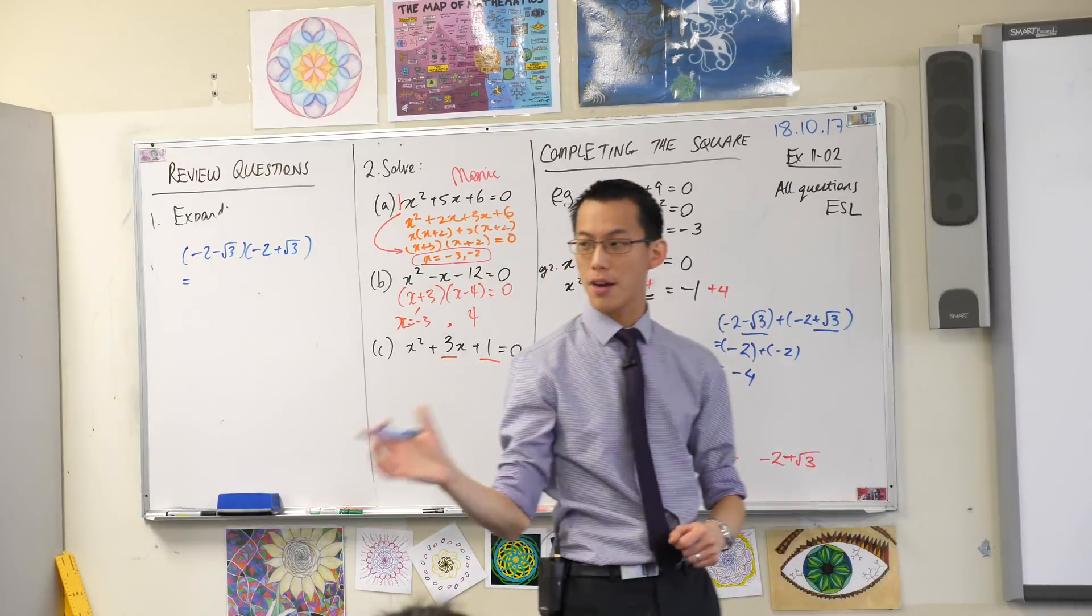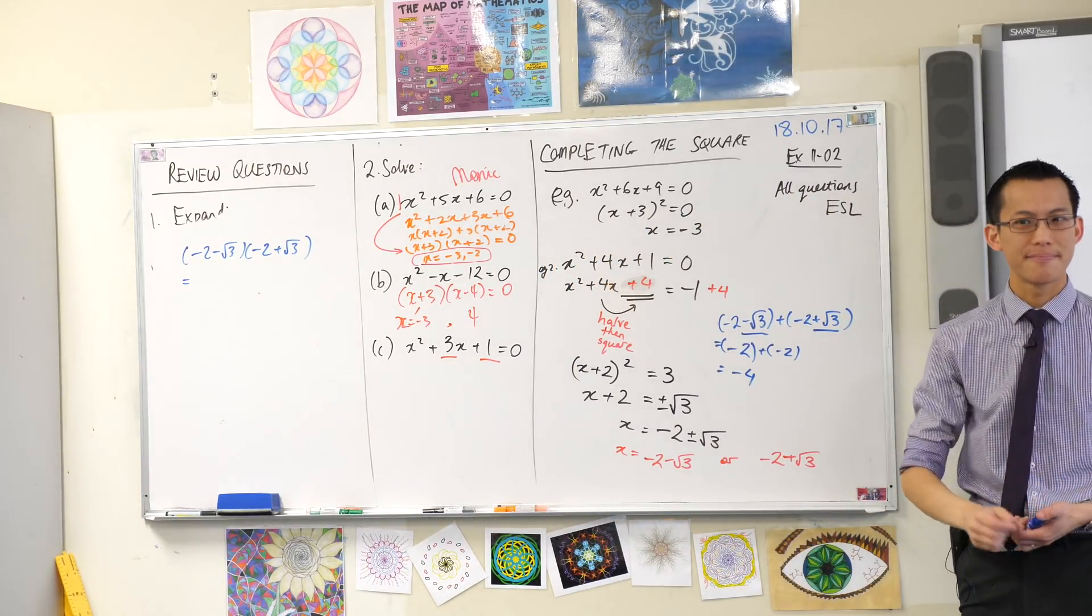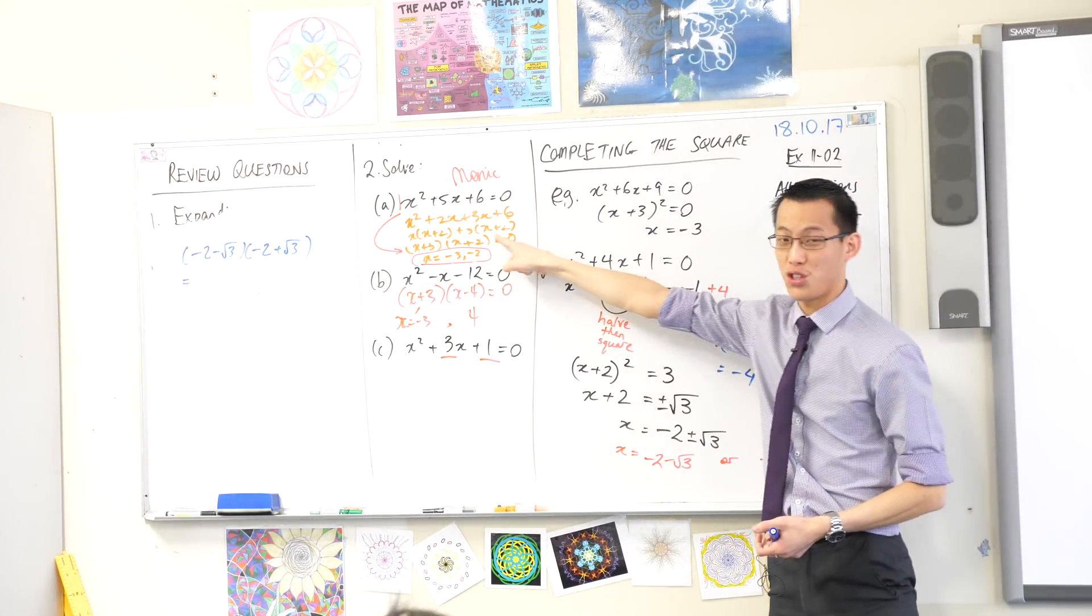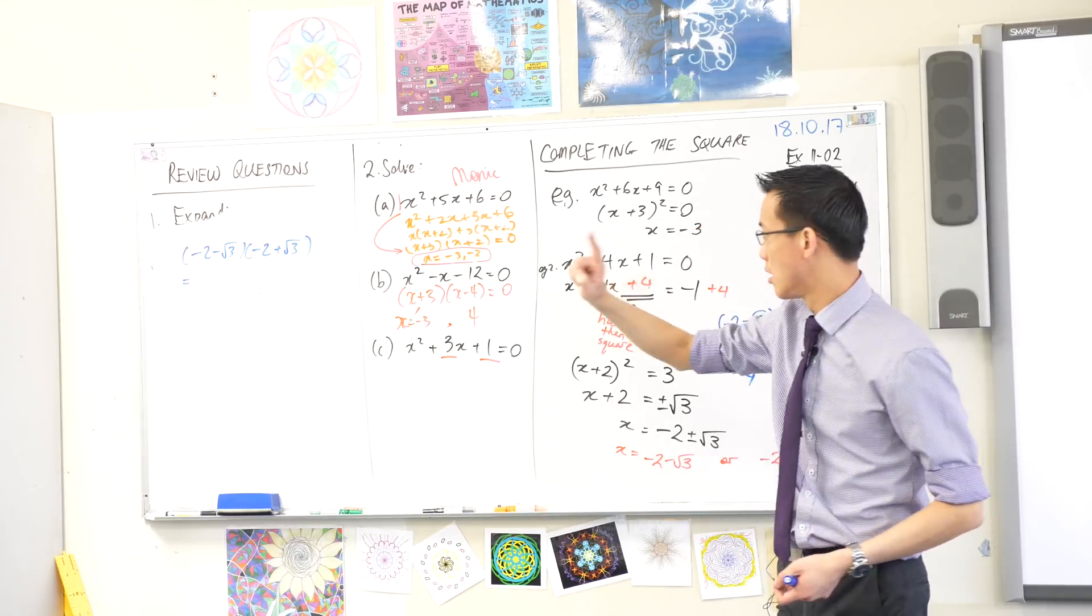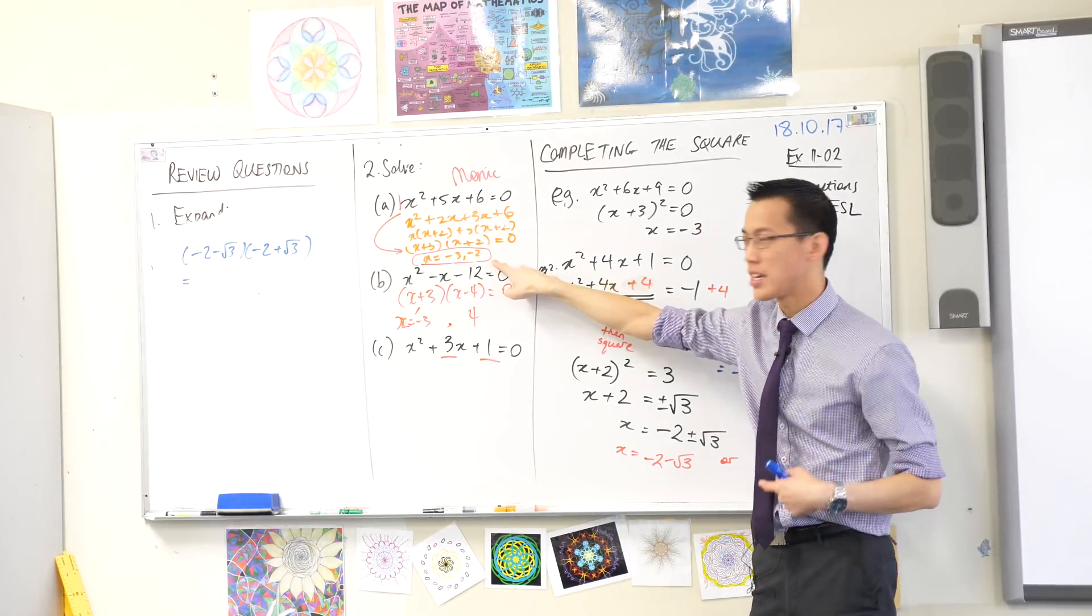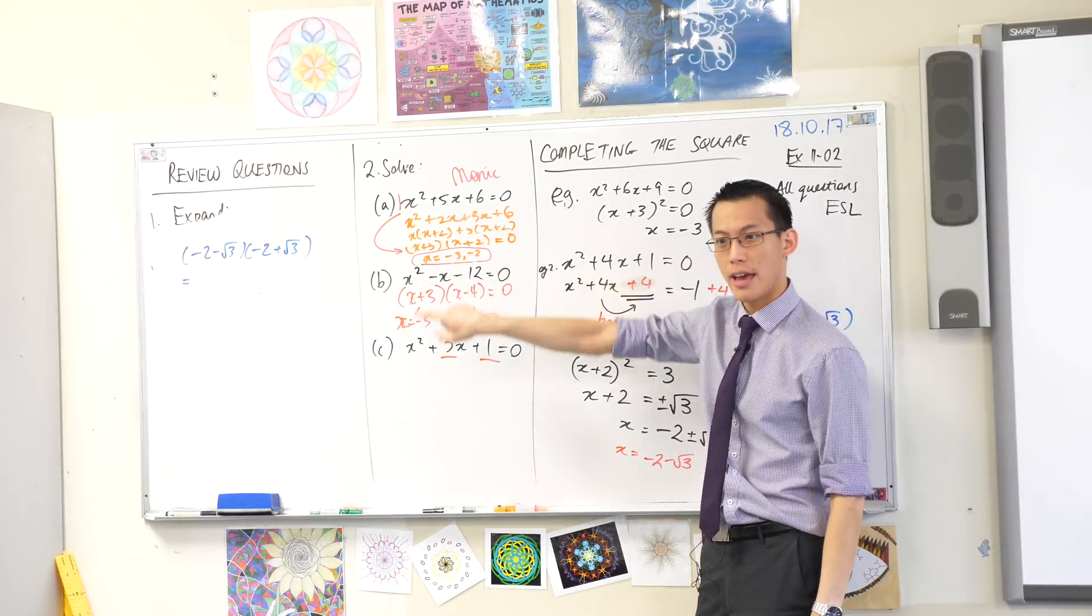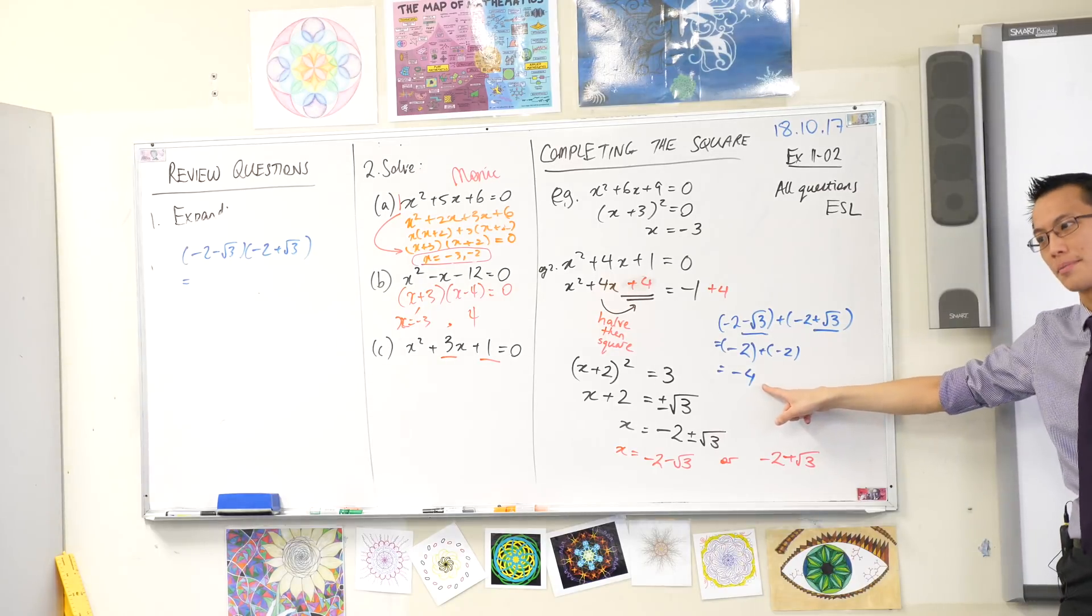When you think of that pair of numbers 2 and 3, you're not actually thinking of the solutions, which are these guys. You're thinking of the factors that give you solutions. They're actually opposites. Do you see that? It's because they're opposites that you get this being opposite.